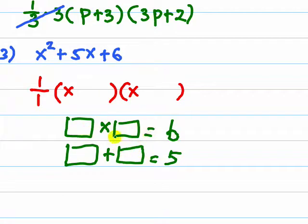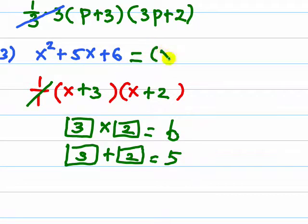So the 2 numbers, we can easily see they are 3 and 2. So this is plus 3 and plus 2. Now this 1 over 1 is equal to 1 and we can just ignore it. So this is equal to x plus 3 times x plus 2.